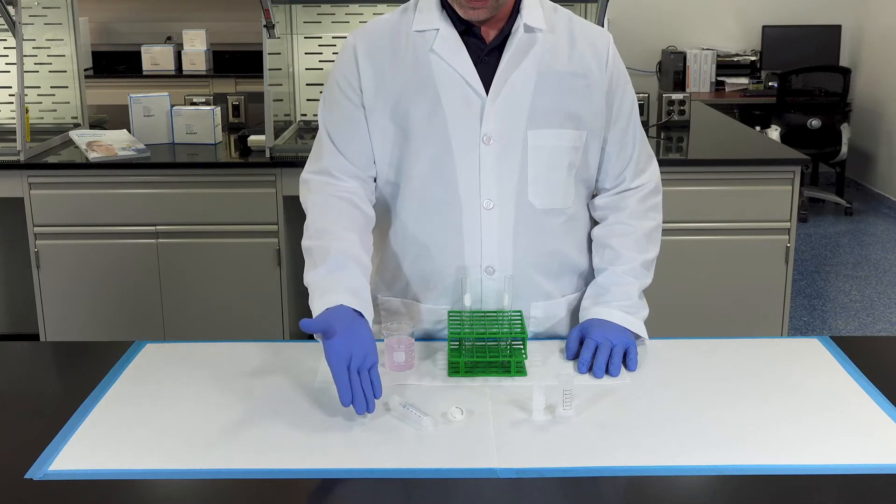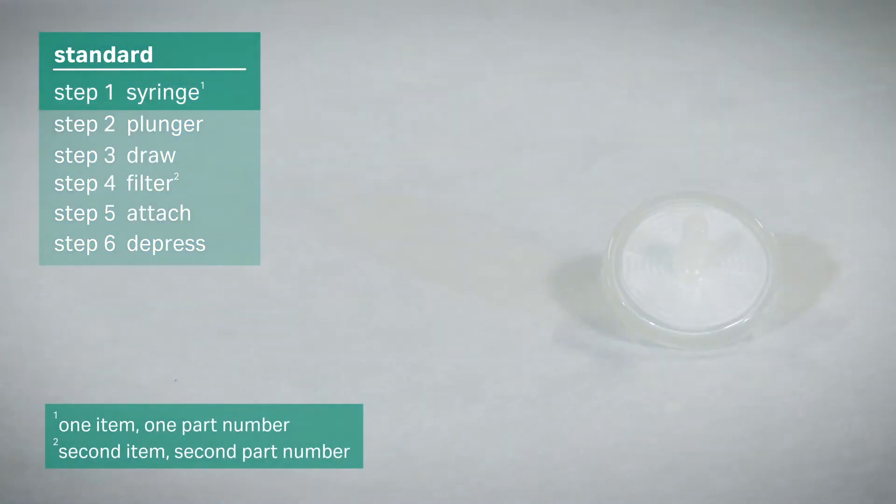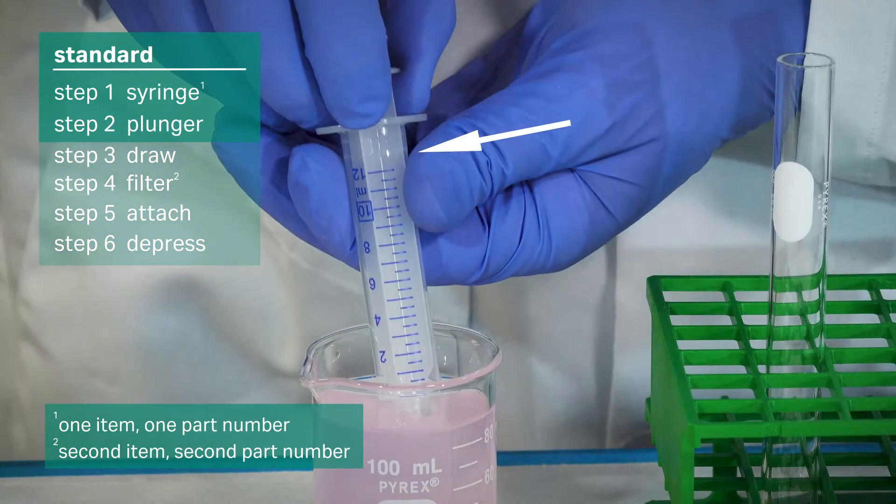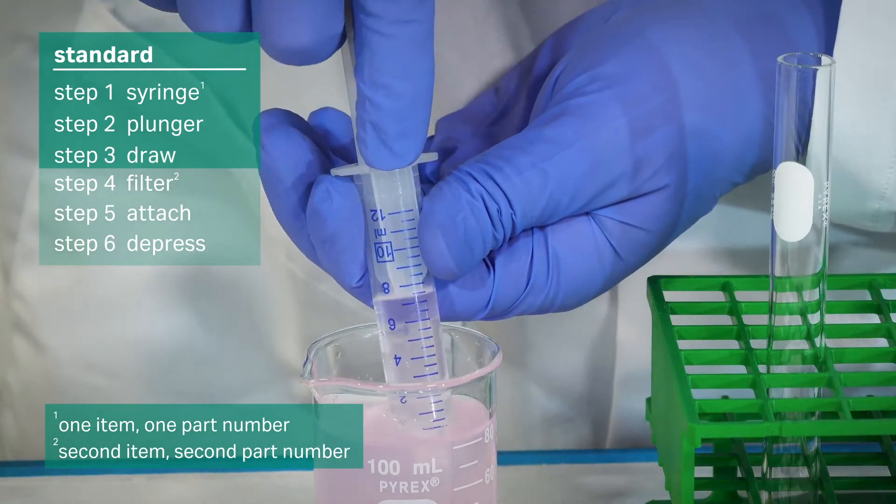First, let's look at the standard syringe and syringe filter. Retrieve your standard syringe. Begin with a plunger inside the syringe barrel. Draw the liquid to be filtered into the syringe barrel.